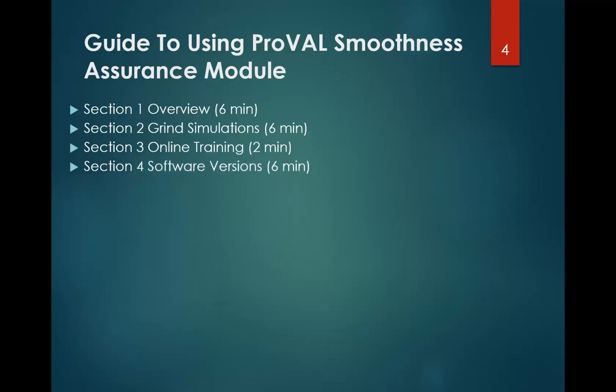Section four covers the software versions. As of December 2017, there are versions 3.5 and 3.6, and there are differences between how these two versions work when it comes to developing a grind plan. Version 3.5, the older version, will develop a grind plan for a single wheel path, and you have to analyze the wheel paths separately.